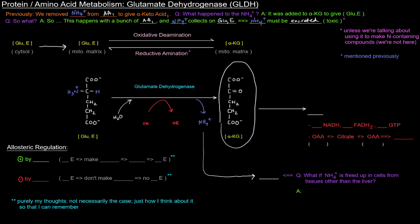This oxidative process requires an oxidizing agent — either NAD+ or NADP+. If it's NAD+, that becomes NADH; if it's NADP+, it becomes NADPH. This reaction is catalyzed by glutamate dehydrogenase — a dehydrogenase that catalyzes redox reactions.